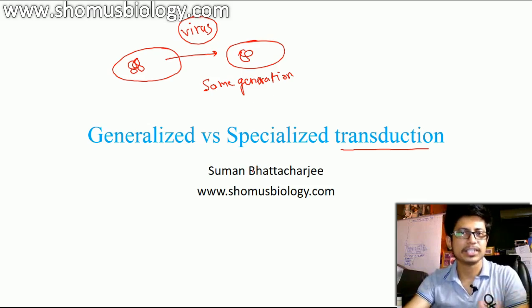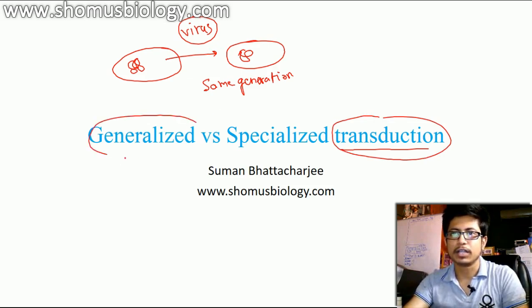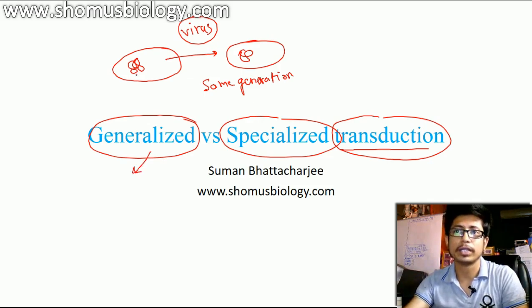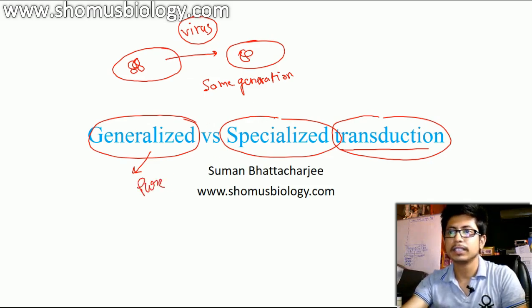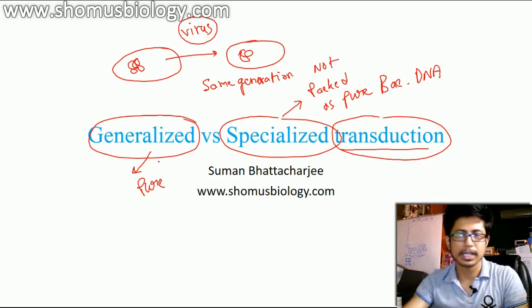There are several ways that two bacteria share genetic content, but when they involve a virus particle to transfer the gene or genetic content from one bacteria to the other bacteria, it is known as transduction. There are two types: generalized and specialized. In generalized transduction, it is the transfer of pure DNA content from one bacteria to the other. While in specialized transduction, the genetic content transferred is not packaged as pure bacterial DNA — that is the major difference.